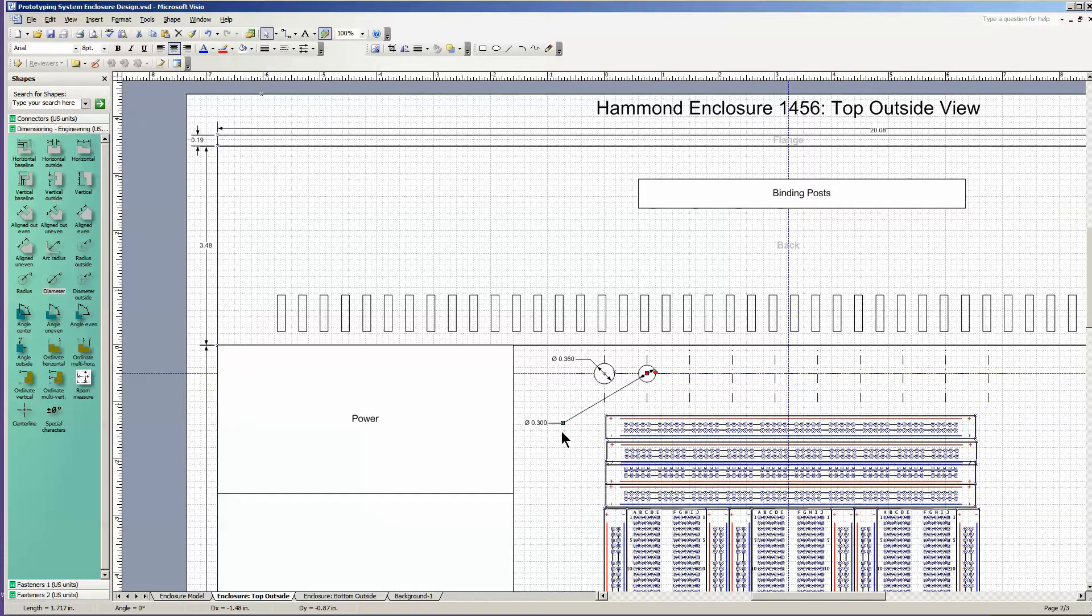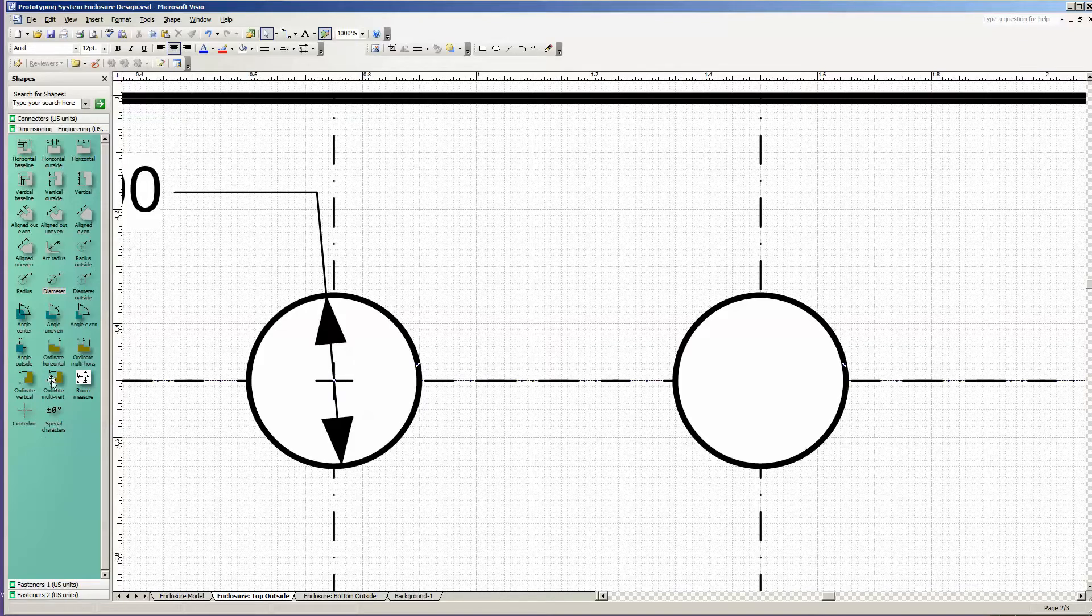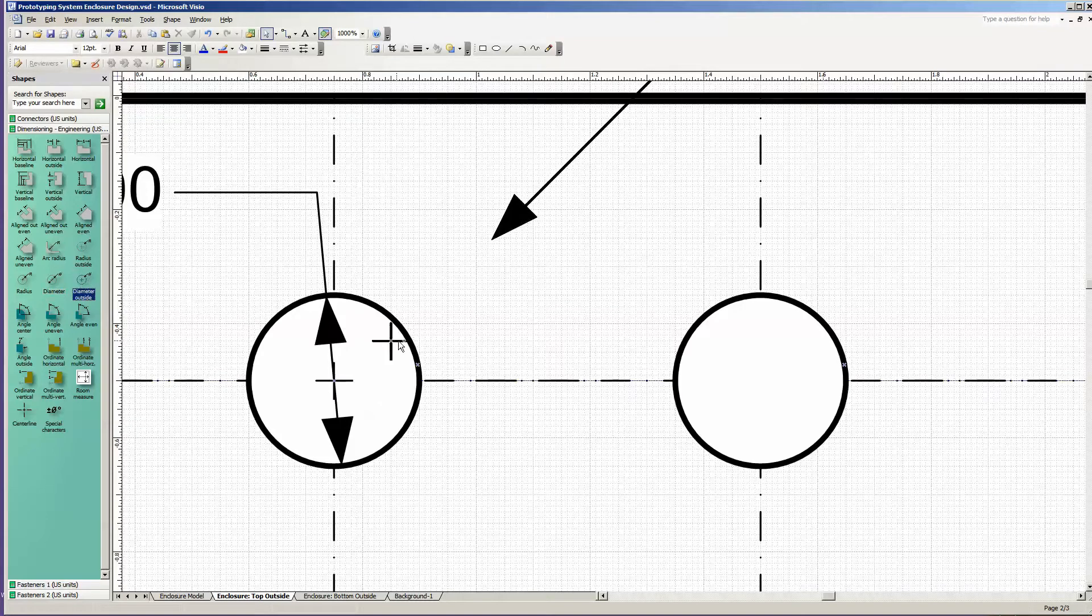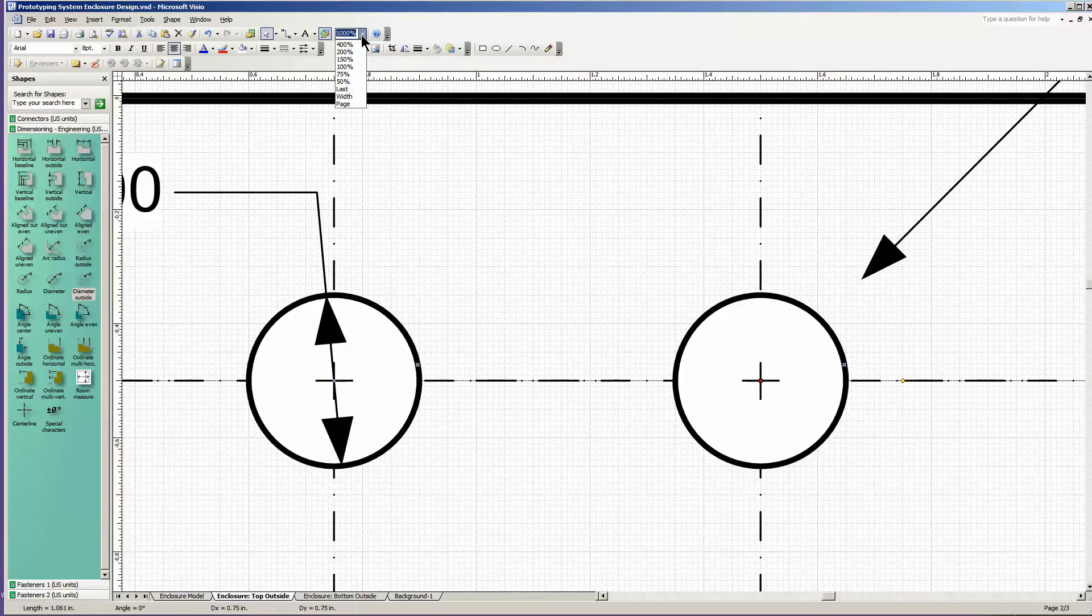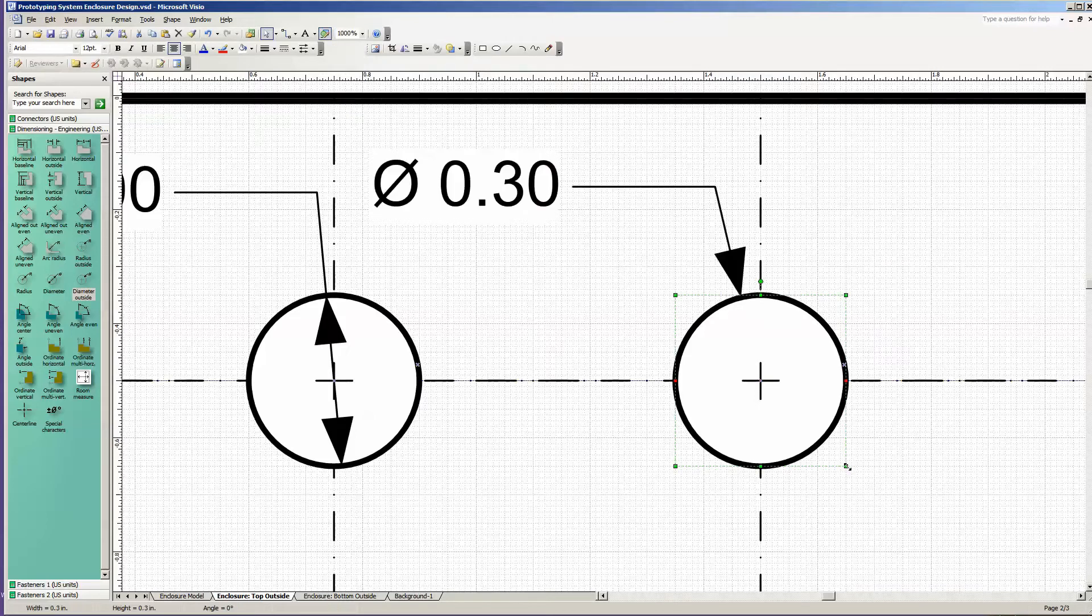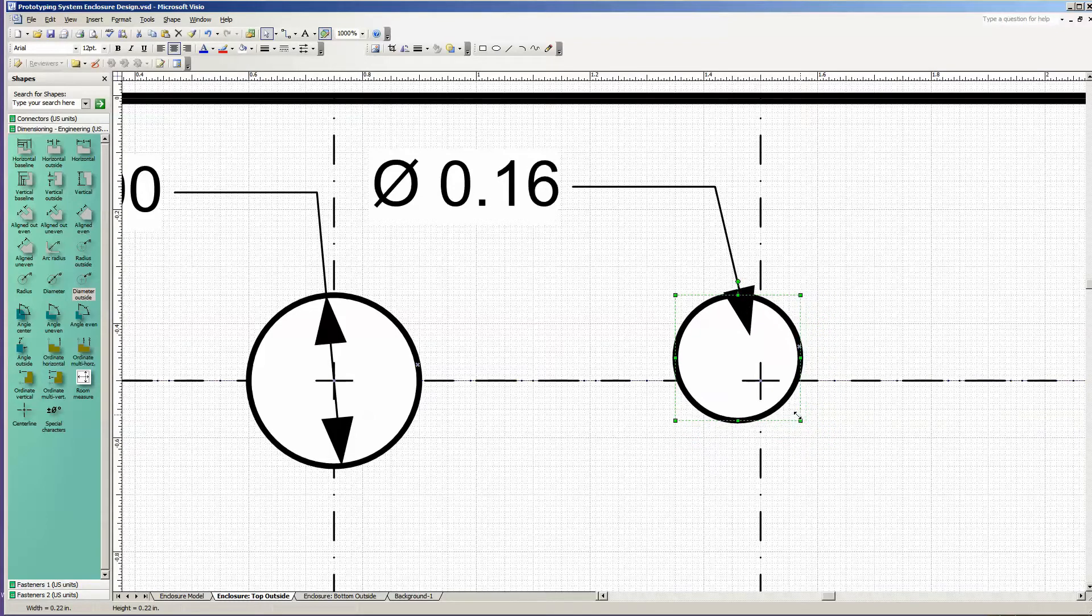And finally, the third type of binding post, the chrome binding post I'm using for chassis ground. Copying the combined objects. And place the, oops, I think I lost a dimensioning object, I need to get one. And associate that with the circle. And position it, if I can see it. And finally, adjust the size of the circle to correspond to the proper diameter.